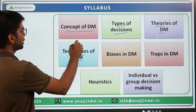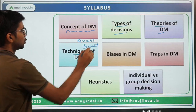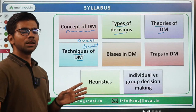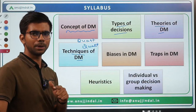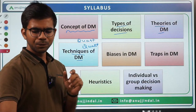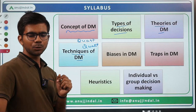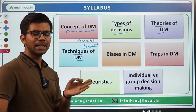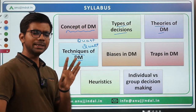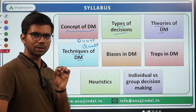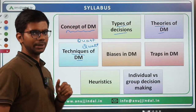Techniques of decision making can be classified into quantitative and qualitative. There are various techniques like decision tree, simulation, nominal group technique, Delphi technique, brainstorming, multivoting, fault tree analysis, and Boolean logic. You need to have a basic idea of all those techniques, whether quantitative or qualitative.